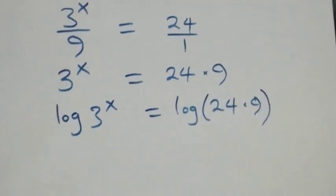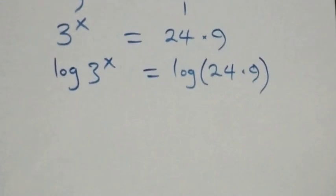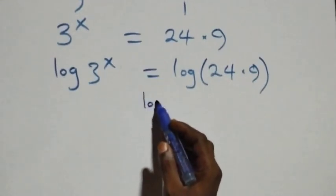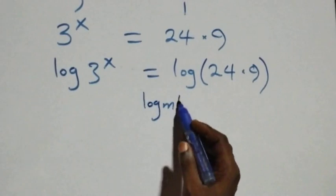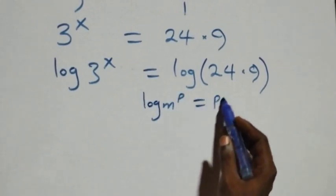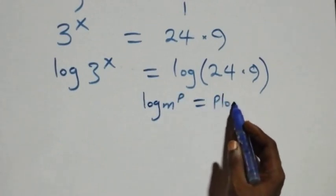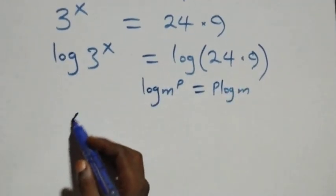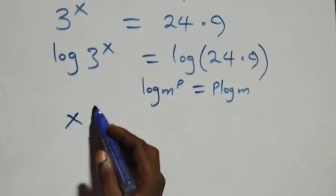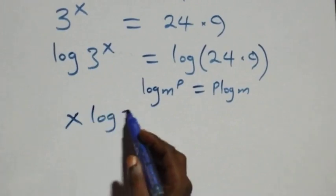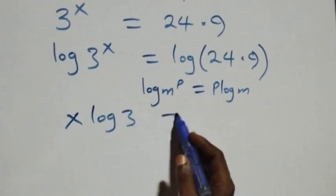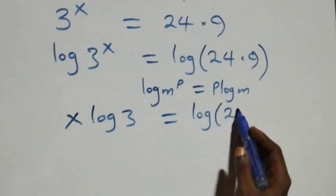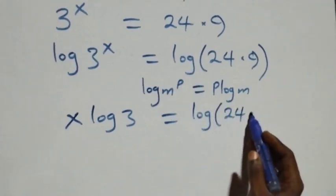From here we apply the power rule of logarithms: log n raised to power p equals p times log n. Then what we have becomes x times log three equals log of twenty-four times nine.